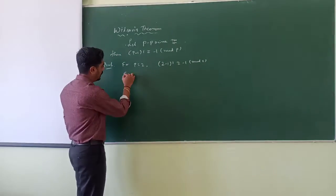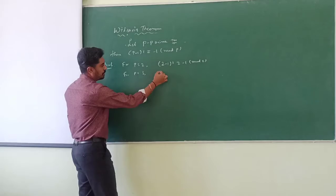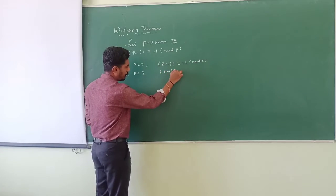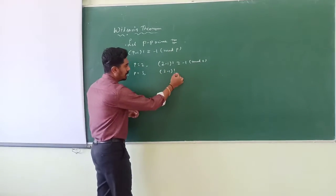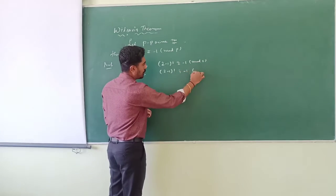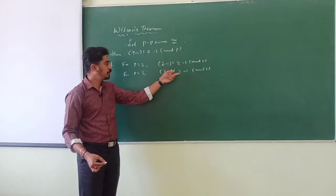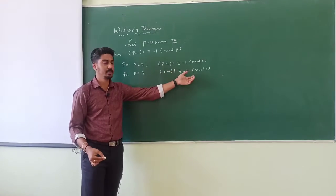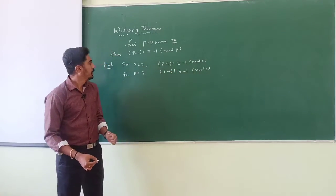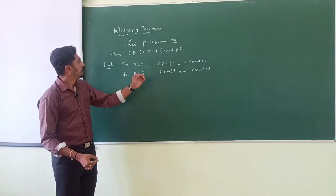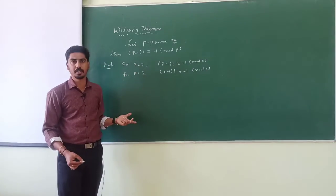For p equal to 3, we have (3 minus 1) factorial, which is 2, is again congruent to minus 1 modulo 3, since 2 minus (minus 1) is 3, which is divisible by 3. So this result holds good for p equal to 2 and p equal to 3.